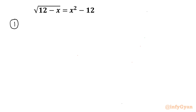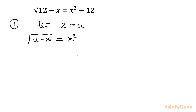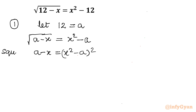For method number one, substitution: let 12 equal to a. So our equation will become square root of (a minus x) equal to x squared minus a. Now I will take squaring on both sides. So a minus x will be equal to (x squared minus a) whole square. Applying the algebraic identity (a minus b) whole square, I can write: a minus x equals a squared plus b squared minus 2ab.